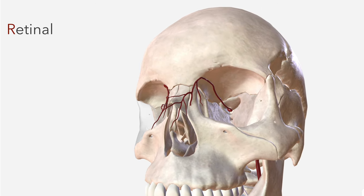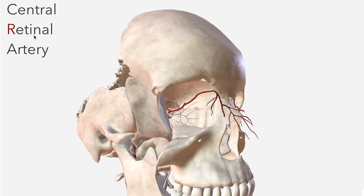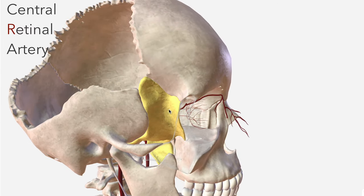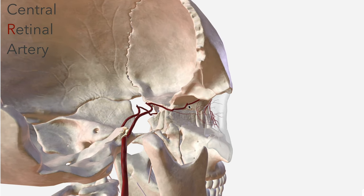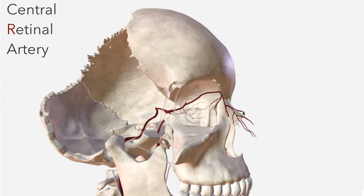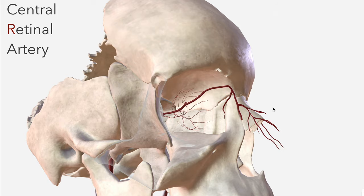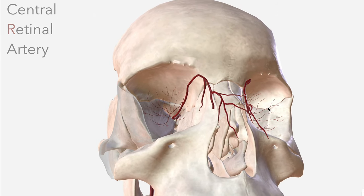Next we have R for retinal — that is the central retinal artery. Departing from the ophthalmic artery quite early in its course, we should remove the sphenoid bone to get a better appreciation of that. The central retinal artery matches the course of the optic nerve and together with it pierces the globe at its most posterior aspect before supplying the retina with its arterial blood.